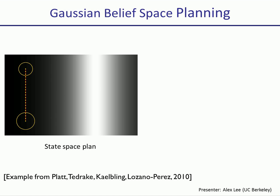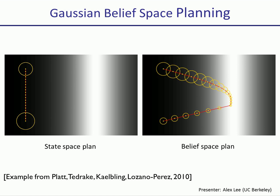If instead of planning in state-space we plan in belief-space, the robot will go to the right to the light region first in order to localize itself better, and then return to the left to reach the goal. Notice that in this case, the robot is able to reach the goal with a smaller uncertainty than the one it started with.